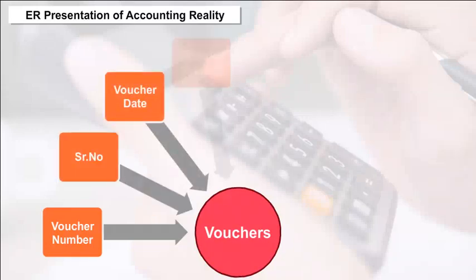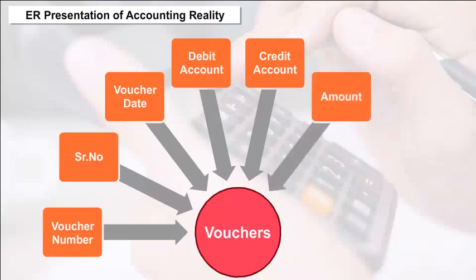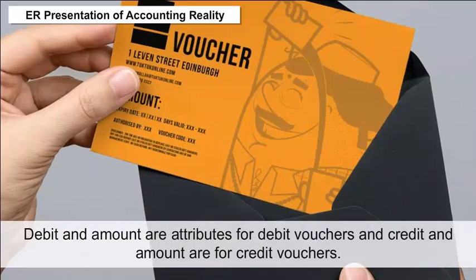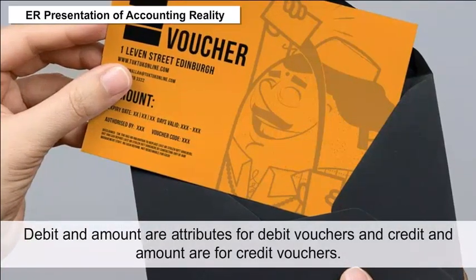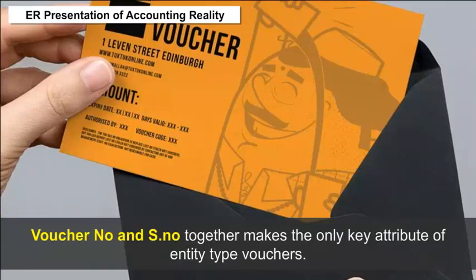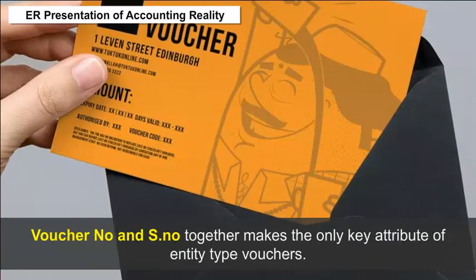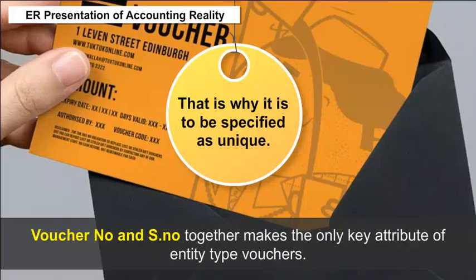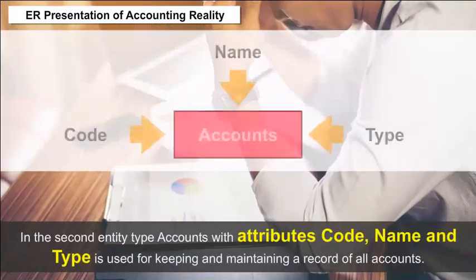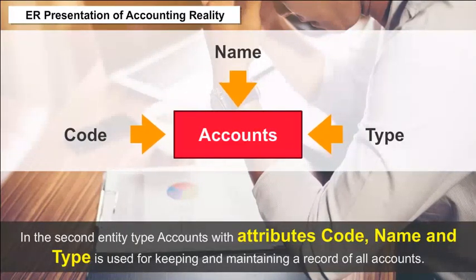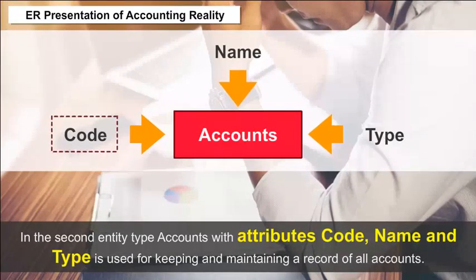Debit and amount are attributes for debit vouchers, and credit and amount are for credit vouchers. Voucher number and serial number together make the only key attribute of entity type Vouchers, and are therefore specified as unique. In the second entity type, Accounts, with attributes code, name, and type, is used for keeping and maintaining a record of all accounts.